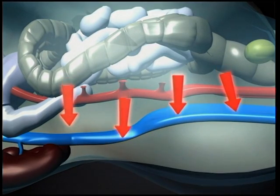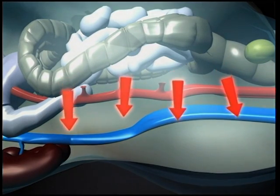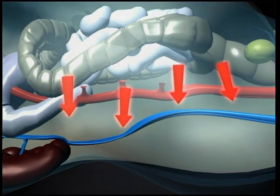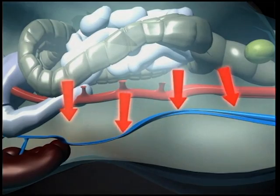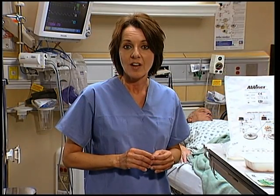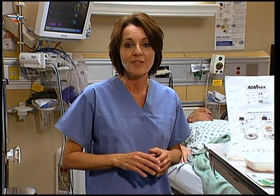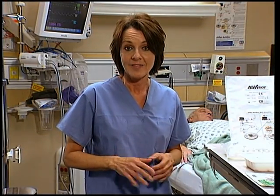This elevated intra-abdominal pressure compresses the inferior vena cava, and as a consequence, blood flow into the heart — also known as preload — drops off dramatically. The result is a decrease in cardiac output and reduced blood flow to critical organs. The reduced blood flow in combination with elevated intra-abdominal pressure often leads to renal and mesenteric ischemia.